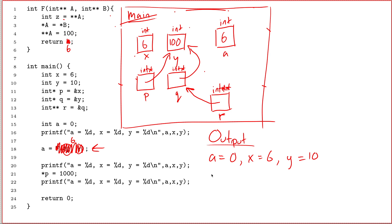Line 20. Print out the values of a, x, and y. So line 20, a equals 6, x equals still 6, and y equals 100.